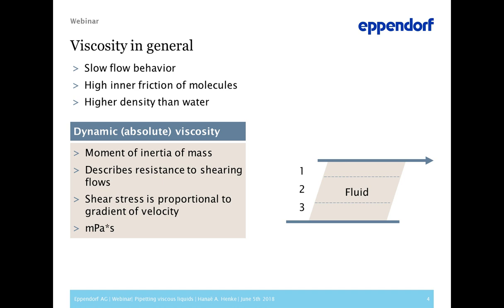The graphic on the right shows the definition of dynamic viscosity. The blue lines are plates with a viscous liquid in between. If you start moving the upper plate, the liquid flows with the plate but only in layers — the first layer is faster than layer two, and layer two is faster than layer three. You need constant force to keep the upper plate moving; otherwise, the high inner friction of molecules will stop it. This also explains why liquid flow takes so long with viscous liquids and a thin layer of liquid remains on the surface.